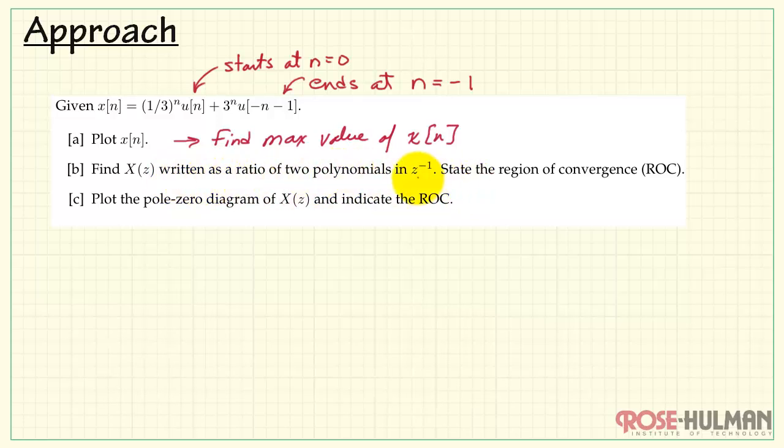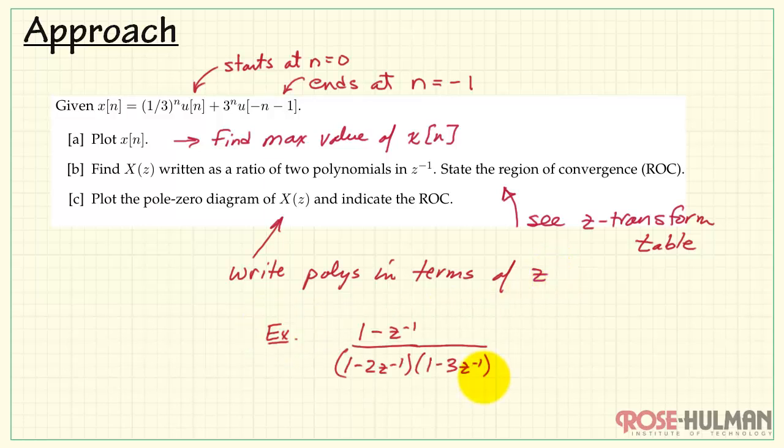In part b, we are looking for the Z-transform. Each of these terms is available in a Z-transform table. Finally, we want to find the pole-zero diagram of X of Z, and also indicate the region of convergence. This is easier when you write the polynomials in terms of Z rather than Z-inverse.